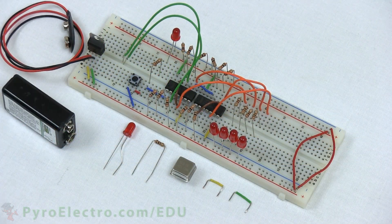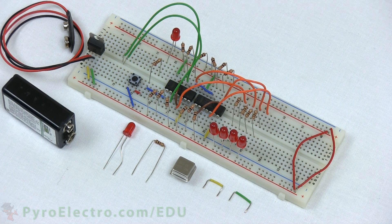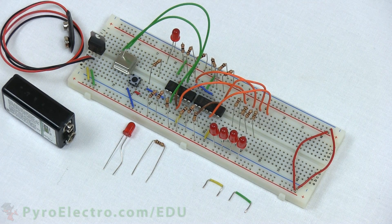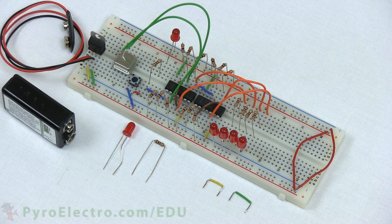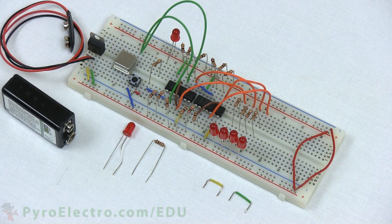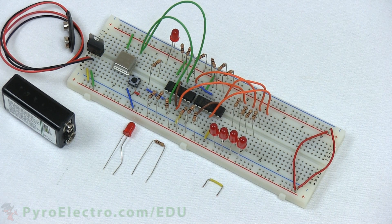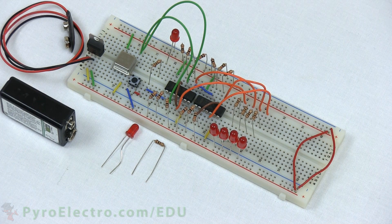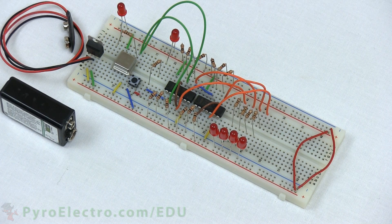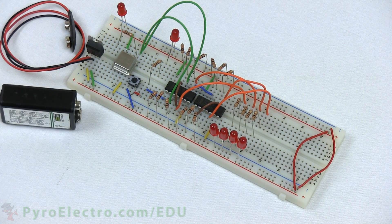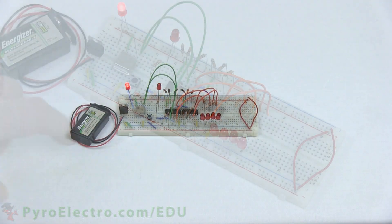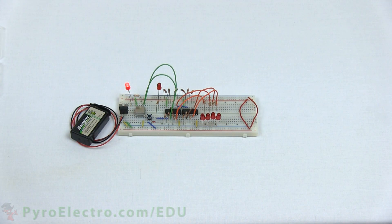Just for fun, let's take out the 555 timer and put in the crystal oscillator. Insert the crystal oscillator in the breadboard, add power and ground, and then connect the output to the D flip-flop's clock input. Power the system up, and you'll see like before, the shift register is ready for input.